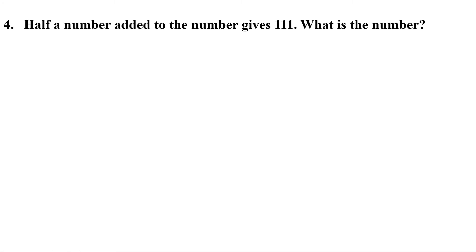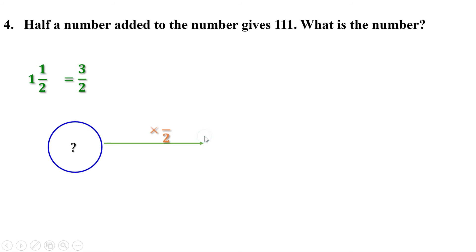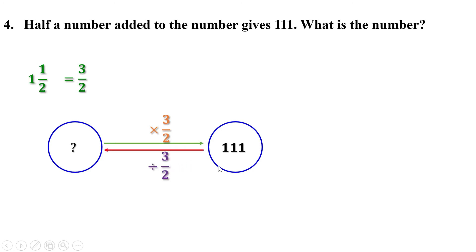Fourth problem: half a number added to the number gives 111. What is the number? When a number is added to half the number, we get 1 and a half times the number. 1½ equals 3/2, so 3/2 times the number is 111. To find the number, divide 111 by 3/2. Division by a fraction is multiplication by the reciprocal: 111 divided by 3/2 equals 111 multiplied by 2/3.